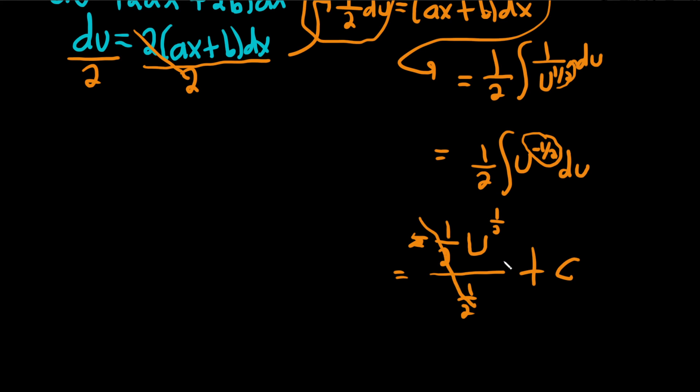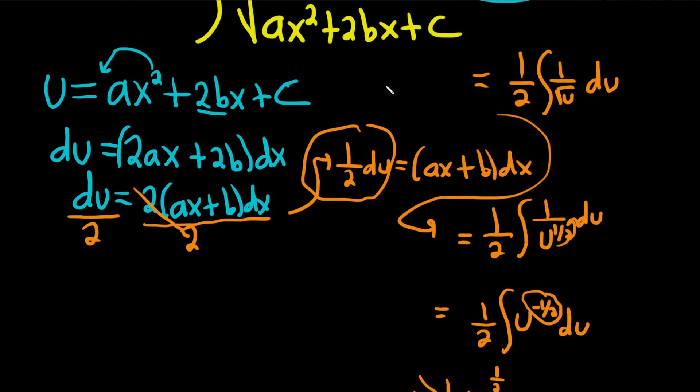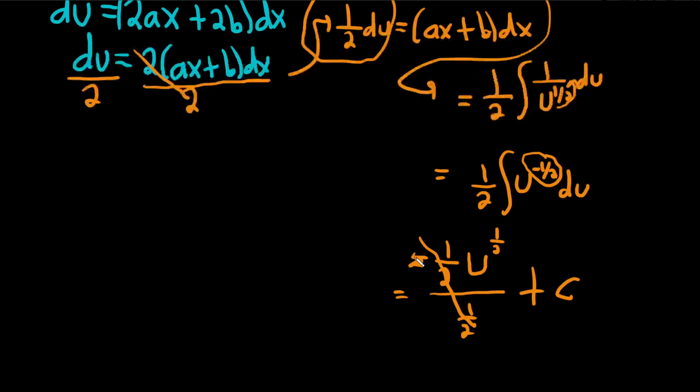Oh, look at that, they go away. So we're left with u to the 1 half. And u, if you remember, u is way up here. It was the ax squared plus 2bx plus c.